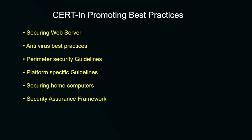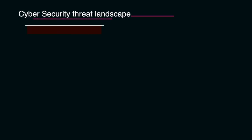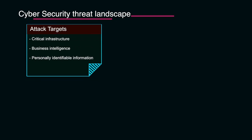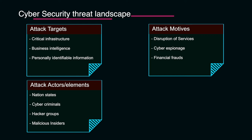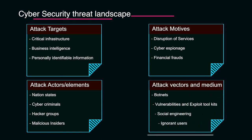The cyber security threat landscape is dynamic in nature, evolving and changing on a daily basis. Attack targets include critical infrastructure, national business intelligence, and personally identifiable information (PII) of individuals. Attack motives include disruption of services in critical infrastructure such as energy blackouts, cyber espionage, extracting confidential information from organizations, and financial fraud. Attack actors include nation states, cyber criminals, hacker groups, and sometimes malicious insiders. Attack vectors include botnets, vulnerability and exploit toolkits, social engineering techniques, and ignorant users.